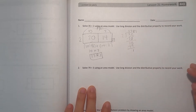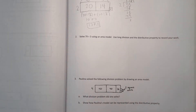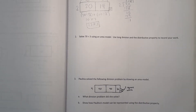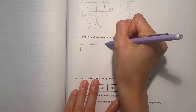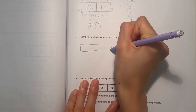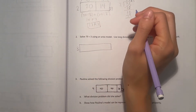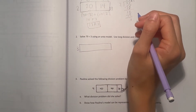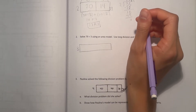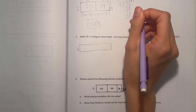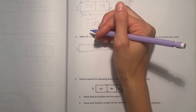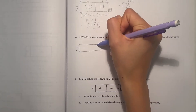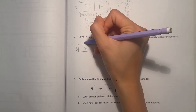Alright, now let's look at number 2: solve 79 divided by 3 using an area model. Use long division and the distributive property to record your work. So our area model, divided by 3. How many tens of 3 go into 79? Skip count by 30: first we have 30, then 60, then 90. 90 is too much, which means we go back to 60. So 60, and 60 divided by 3 is 20.